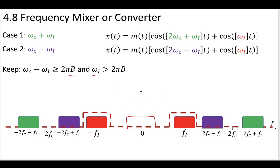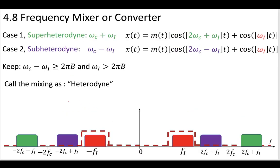As long as you adhere to these conditions, you will get a situation where the high-frequency terms can be completely eliminated by the bandpass filter shown here. When we force these two waves together — our wave at the carrier frequency with a wave at the mixing frequency — we can call that mixing heterodyne. Heterodyne is kind of an old-fashioned word that basically means two different things forced together. Two different frequencies being mixed together is the heterodyne process.